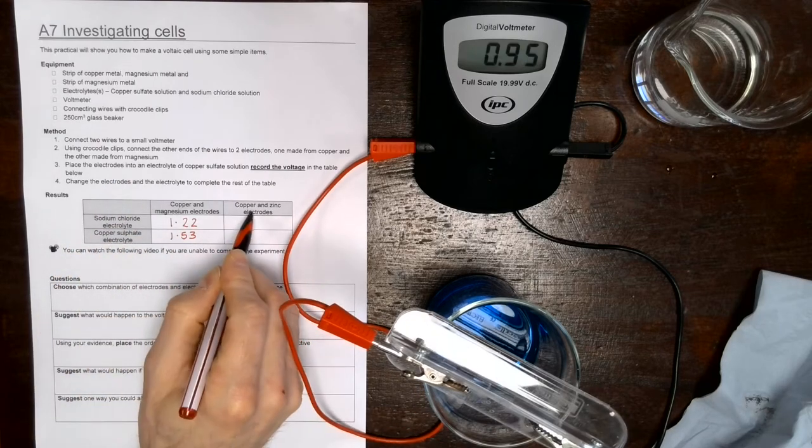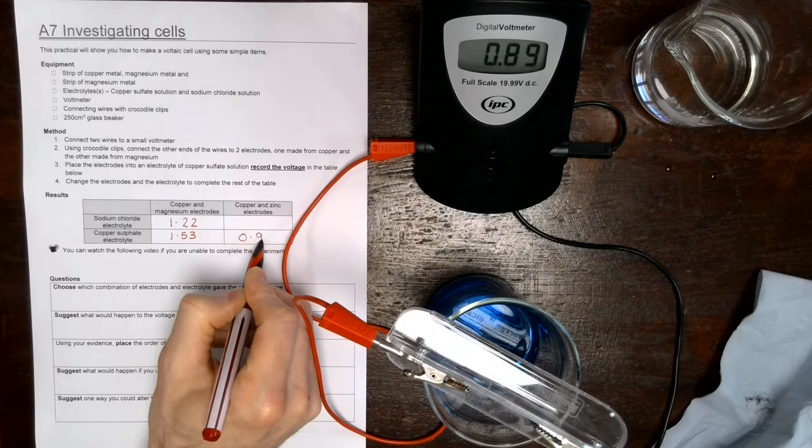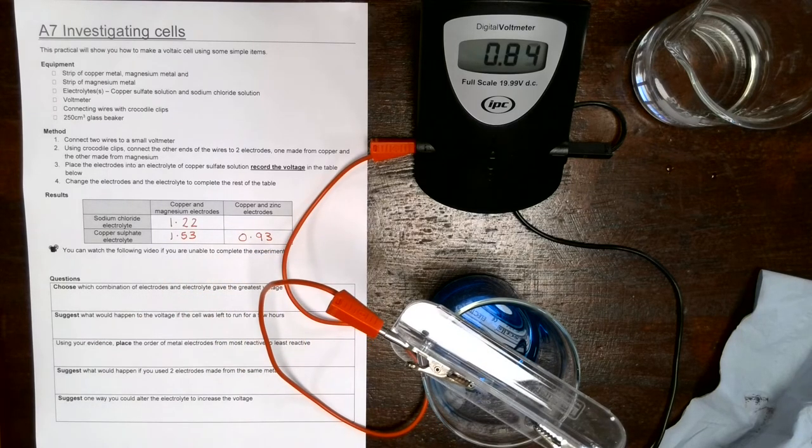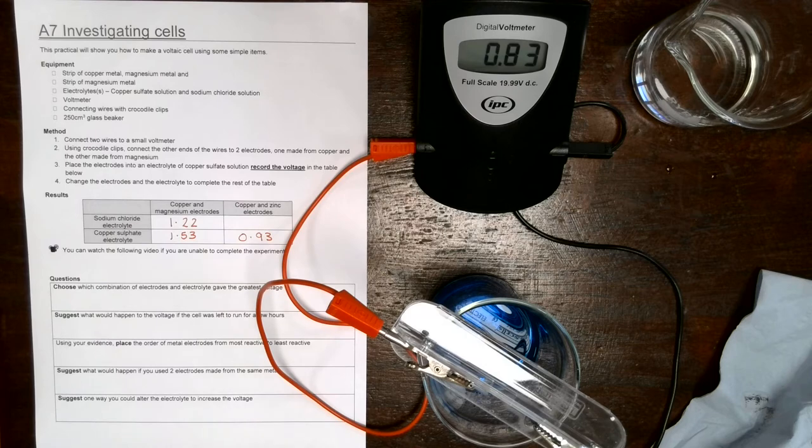And now we get a reading of 0.95, so copper sulfate, copper and zinc, 0.9... it's just changed. I did have 95 but it did go to 93. Okay, now the numbers will start to change ever so slightly as the cell starts to work, but we're not too concerned with that.